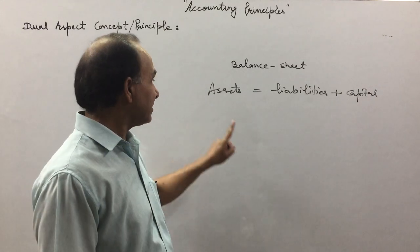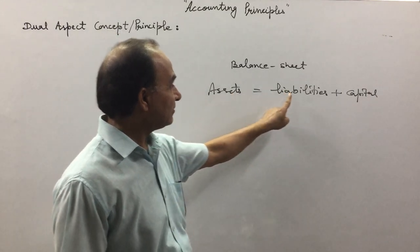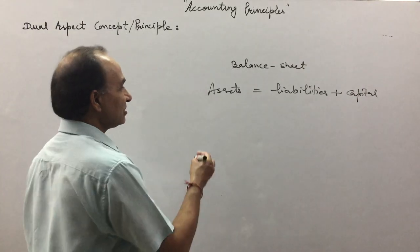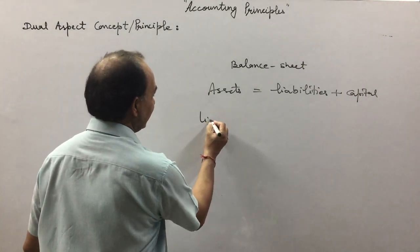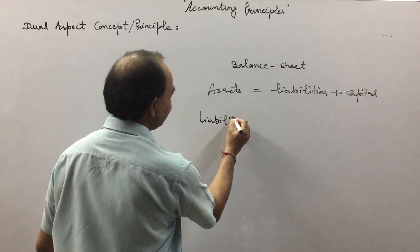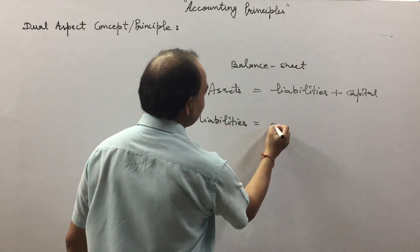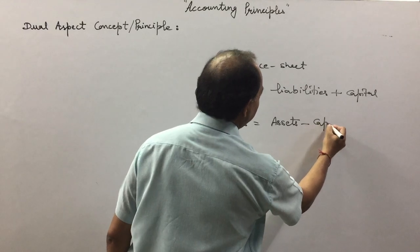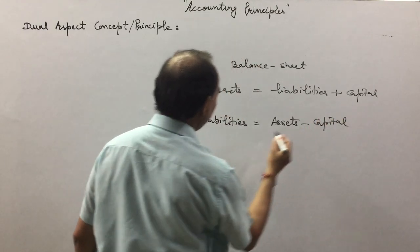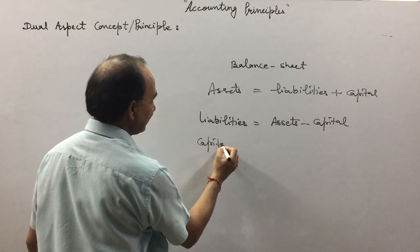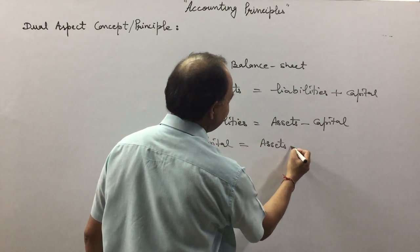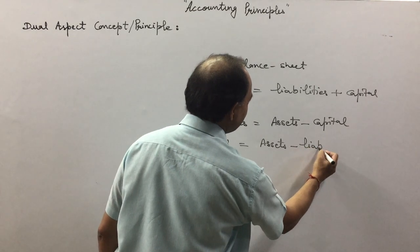...the accounting equation, Assets equals Liabilities plus Capital. Or you can say Capital equals Assets minus Liabilities.